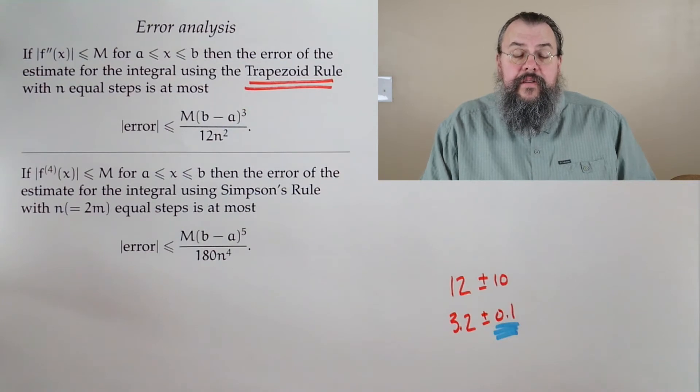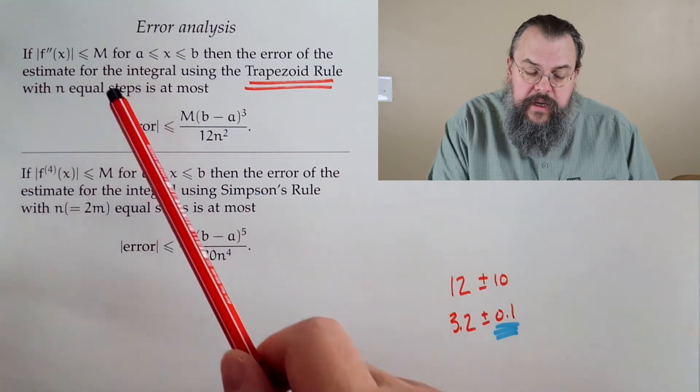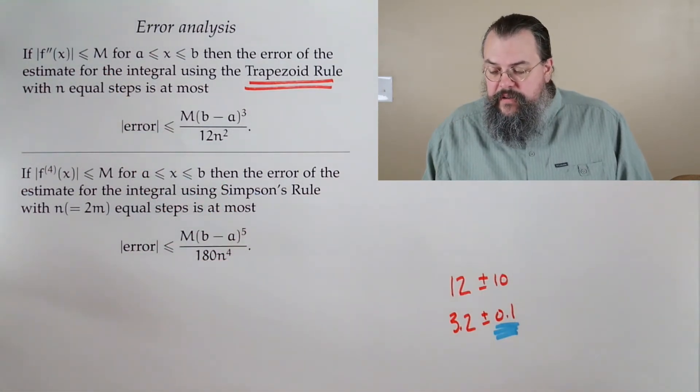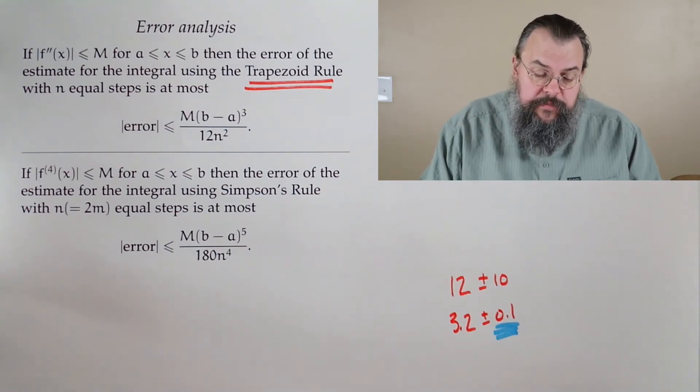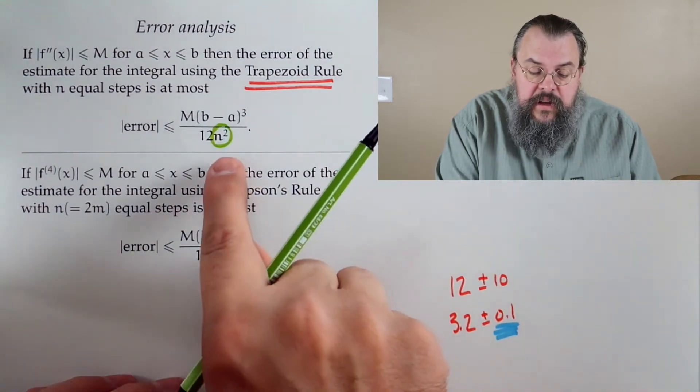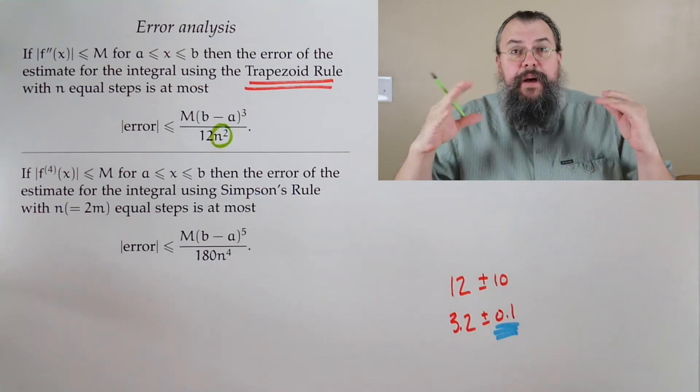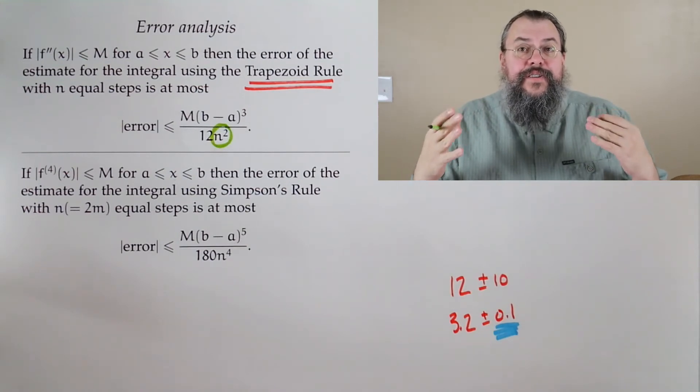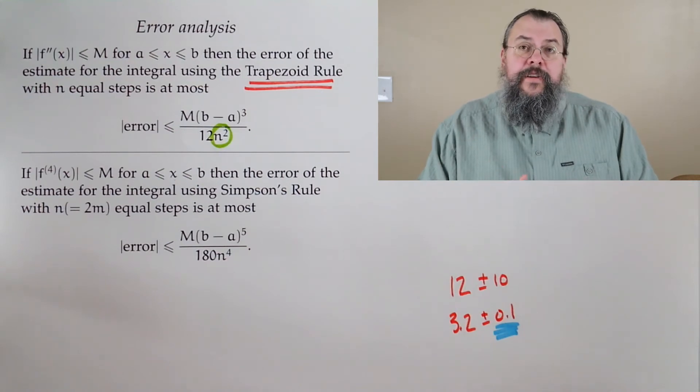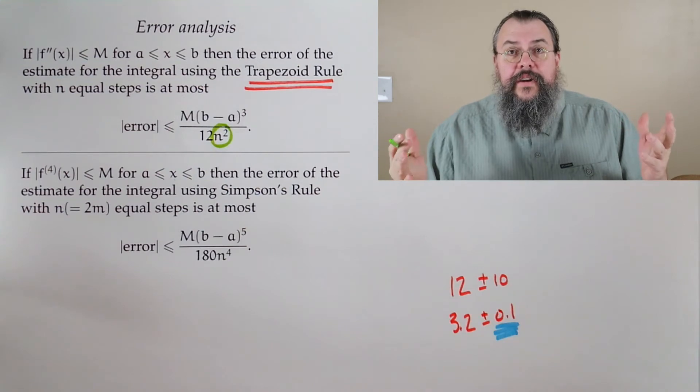Now what does this tell us? Well, it tells us that, look, if our second derivative doesn't get too big, that's a very good thing for us. And the other thing that we can see, and this is good because it matches with our intuition, it says, look, as n increases, that's driving our error down. And it's driving it down, not in the best way. You know, n² does go to zero, not as fast as other things, but it does go to zero.